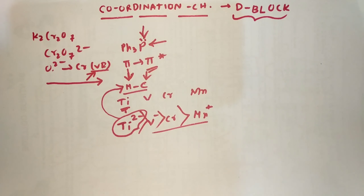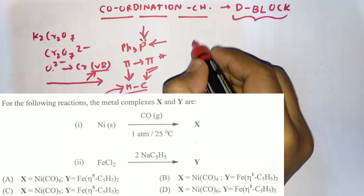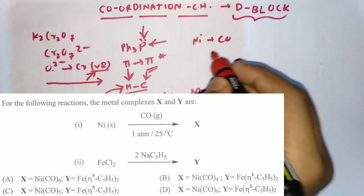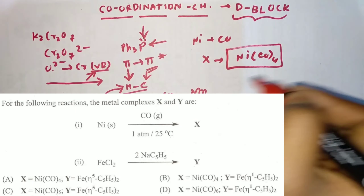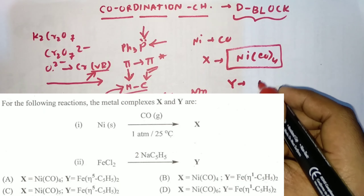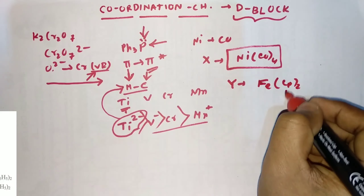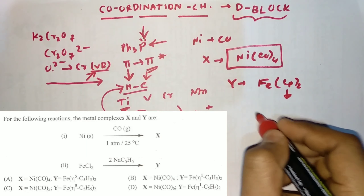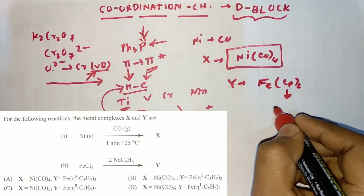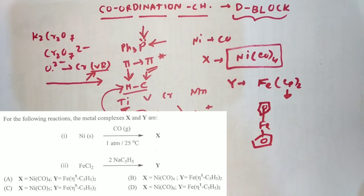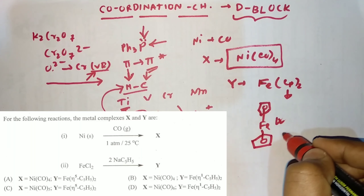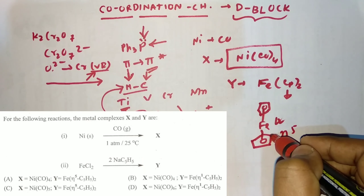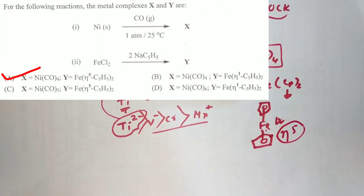The next question involves Ni and Co reactions. X will be Ni(CO)4, which is a tetrahedral complex. For the second reaction with FeCl2, Y will be Fe with cyclopentadienyl (Cp) ligands — that is ferrocene. Option A is correct because five electrons in the cyclopentadienyl system donate electrons, making it η5, not η1. η1 means only one center donates, but here five electrons donate, so it is η5.